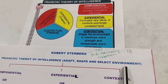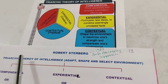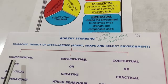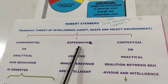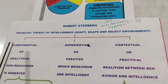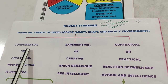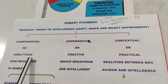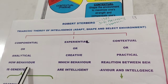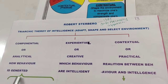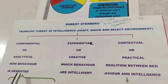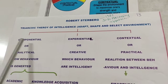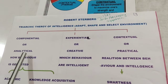So intelligence is about using these abilities to achieve your goals. There are three components of intelligence in this triarchic theory: componential, experiential, and contextual. Componential intelligence is also called analytical intelligence — it refers to our analyzing power and how we regulate and generate our behavior.